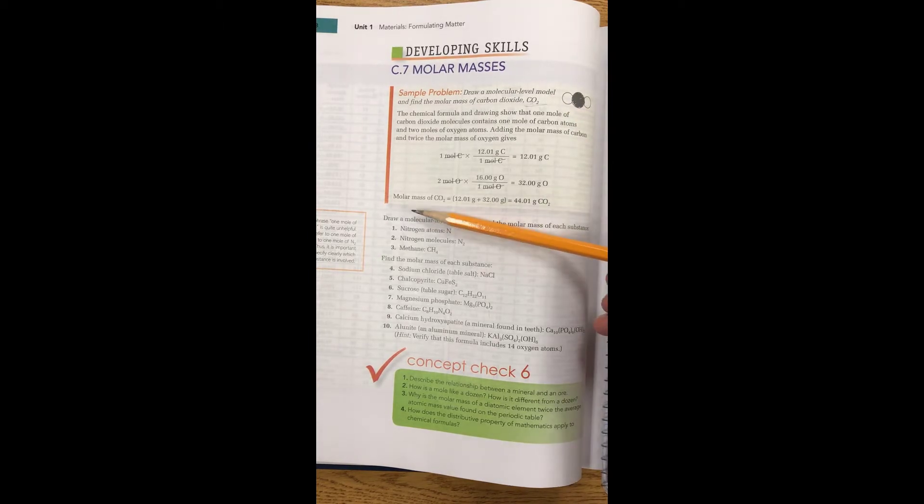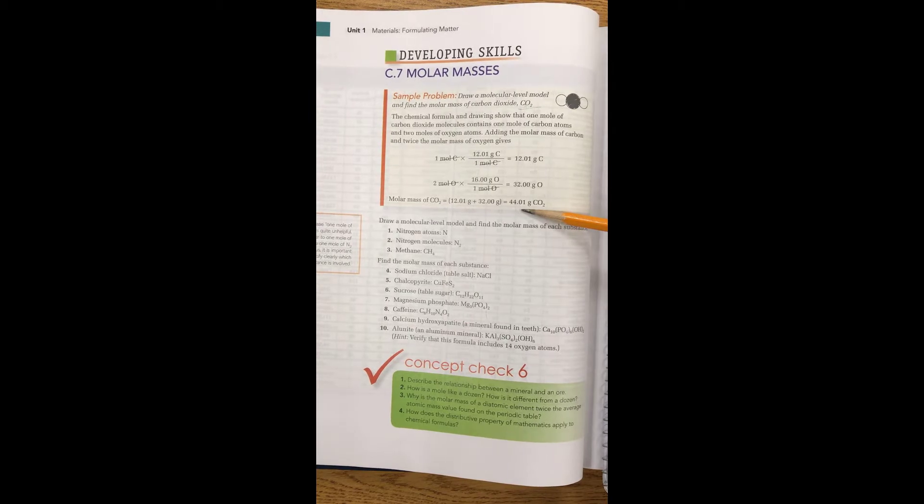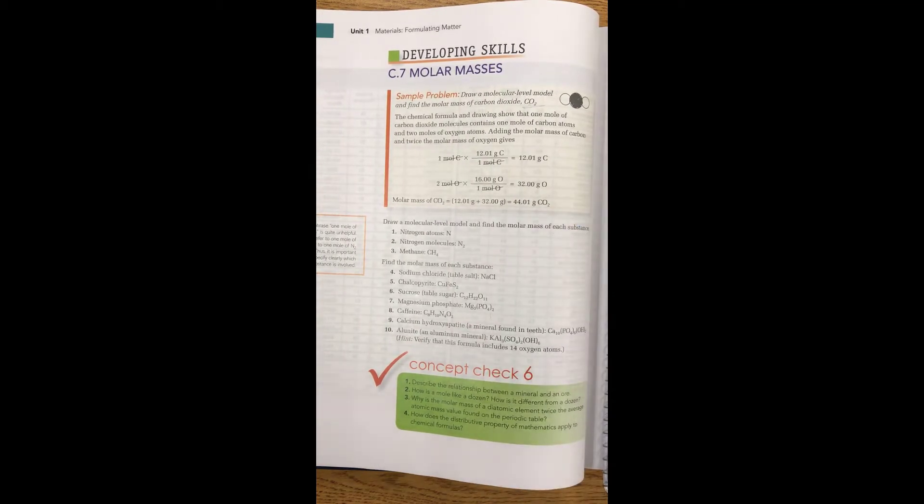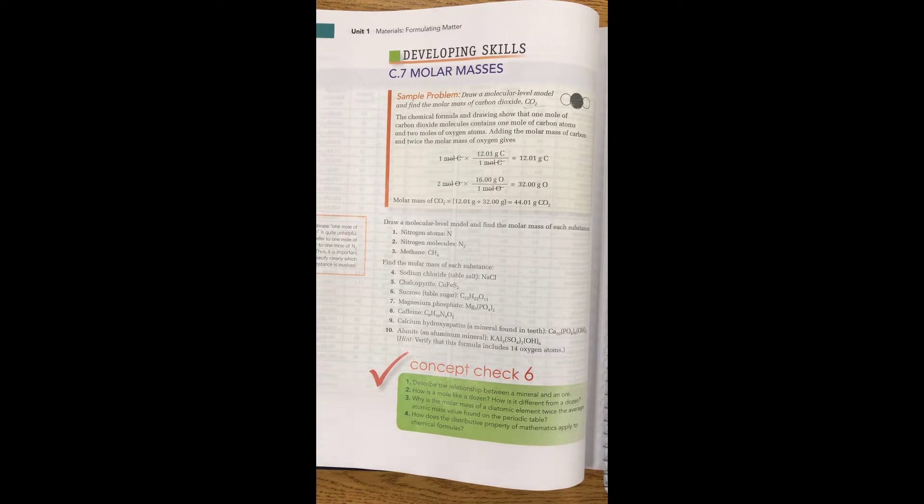And they run through the example, and one mole of CO2 ends up being 44.01 grams. That's what we're going to do down here. We're just going to practice this, because this comes up a lot, and sometimes students forget how to do this. So it's an important concept.